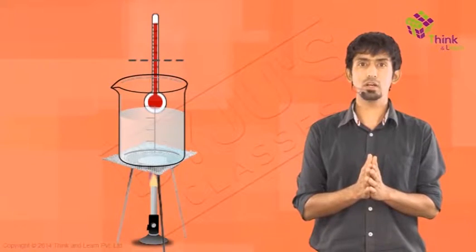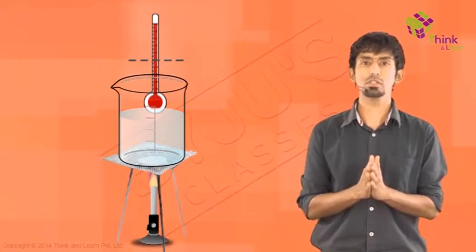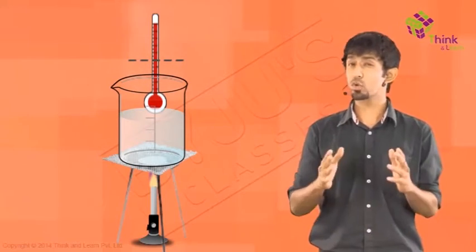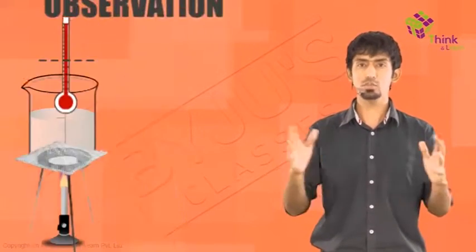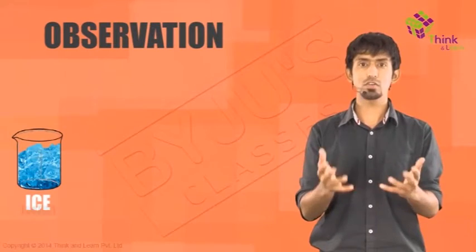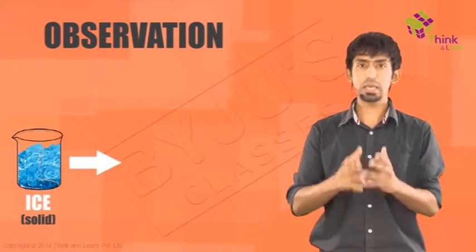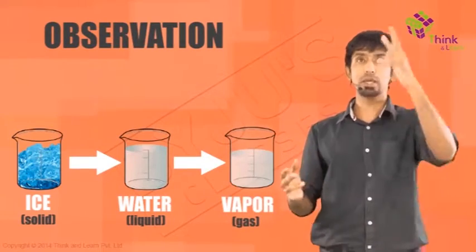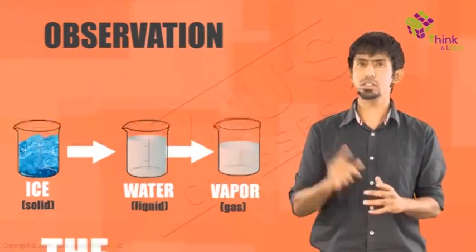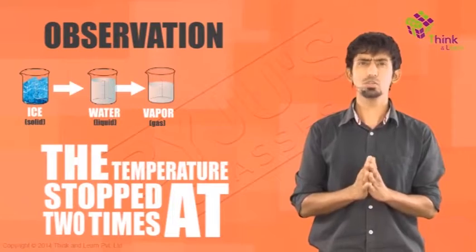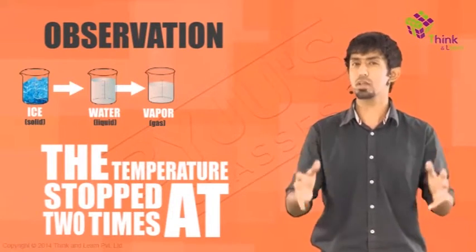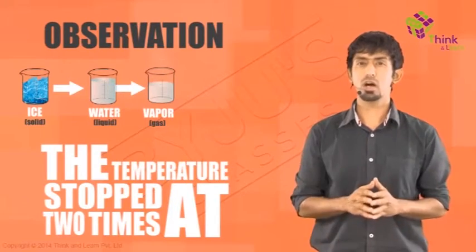You start observing that when it's boiling, again, the temperature is constant. This is what you've seen, even though we don't know why exactly this is happening. Ice, which started off as a solid, became liquid and then you could see the little fumes going up. It boiled, it became gas, and in all this process the temperature stopped at two times. It is our job now to decode what really happened here and find out how we can explain this.